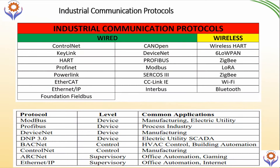If you go for industrial communication protocols, you have wired and wireless. For wired, apart from the most popular ones we already saw, we have many other communication systems such as Interbus, Foundation Fieldbus, PowerLink, KeyLink, ControlNet, etc. For wireless, you have WirelessHART, Zigbee, LoRa, Wi-Fi, Bluetooth, etc.